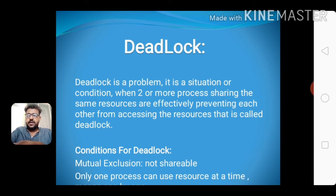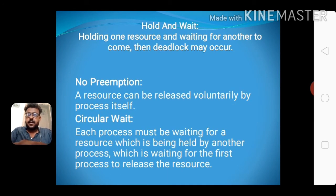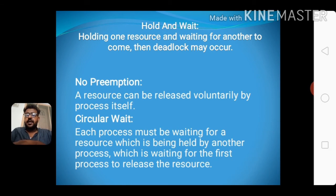Deadlock is a problem. It is a situation or condition when two or more processes sharing the same resource are waiting for each other to release the resource — this is called deadlock. Conditions for deadlock: mutual exclusion — only one process can use a resource at a time; hold and wait — holding one resource while waiting for another; no preemption — a resource cannot be forcibly taken from a process; and circular wait — each process must be waiting for a resource held by another process which is waiting for the first process.